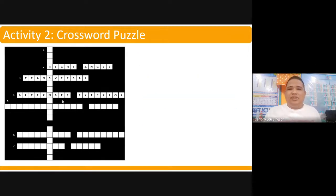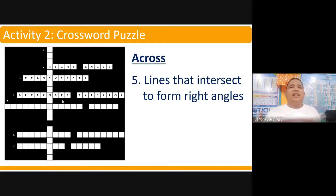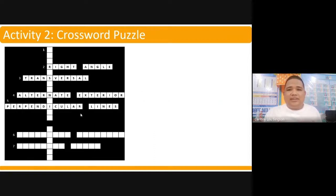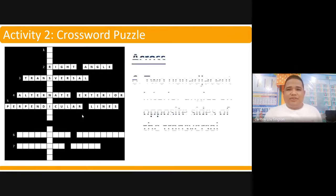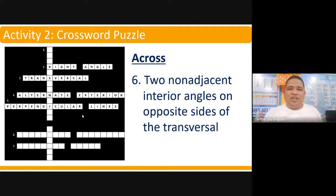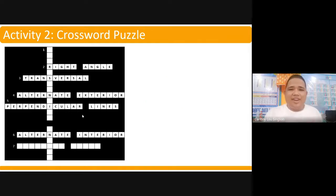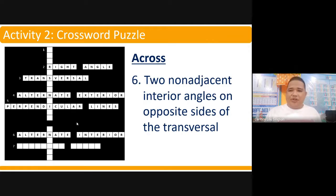Number five: lines that intersect to form right angles. They are called perpendicular lines. Number six: two non-adjacent interior angles on opposite sides of the transversal — they are not on the same side.